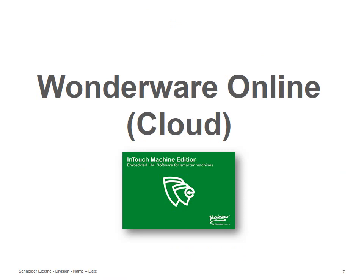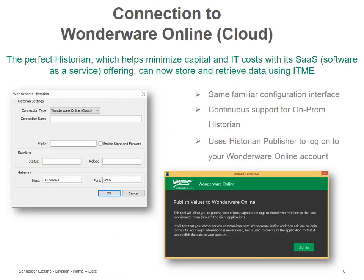We added support for Wanderer Online, which is the historian on the cloud. To configure that is very simple because this feature uses the Historian Publisher — that's what you're gonna use to log on to your Wanderer Online account and then configure the trend task with the tags that are gonna retrieve the data from the field and publish this data on Wanderer Online.